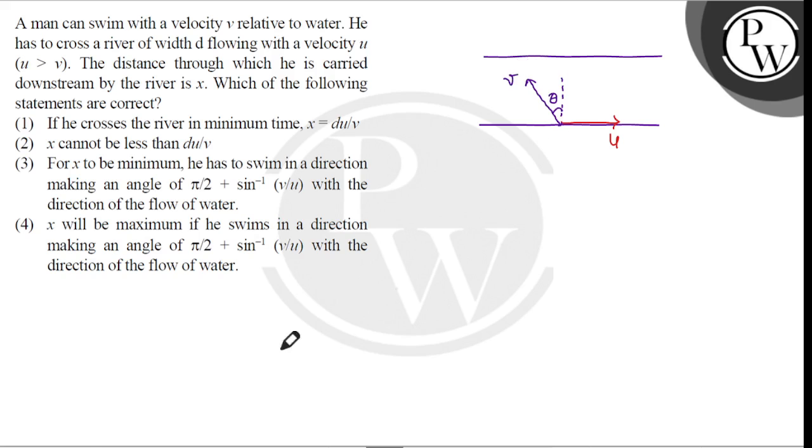So it has two components. One component along the width of the river that is V cos theta. And one component opposite to the flow of the river that is V sin theta.